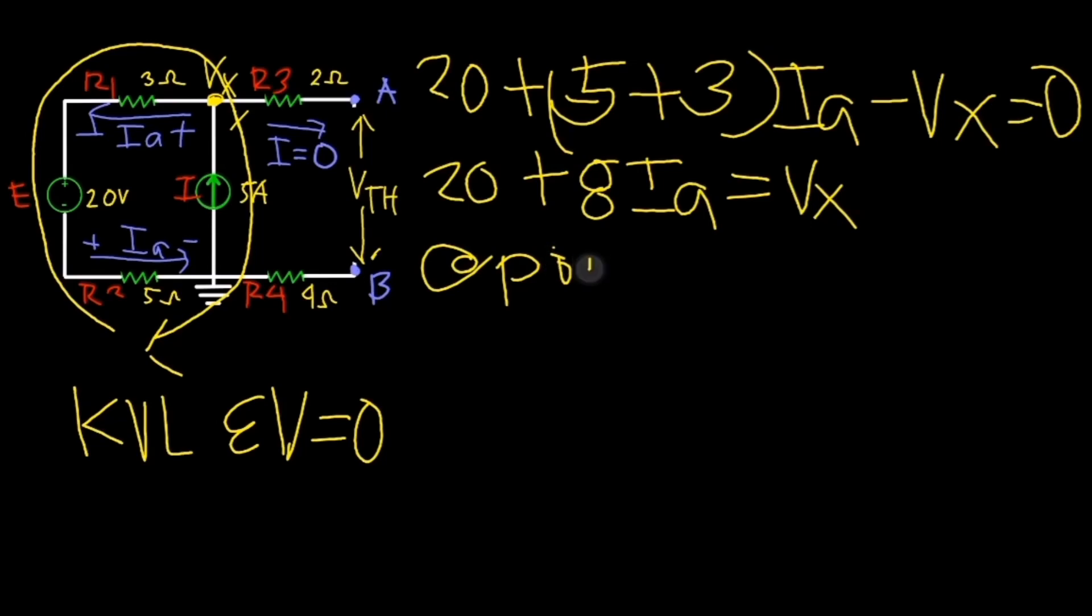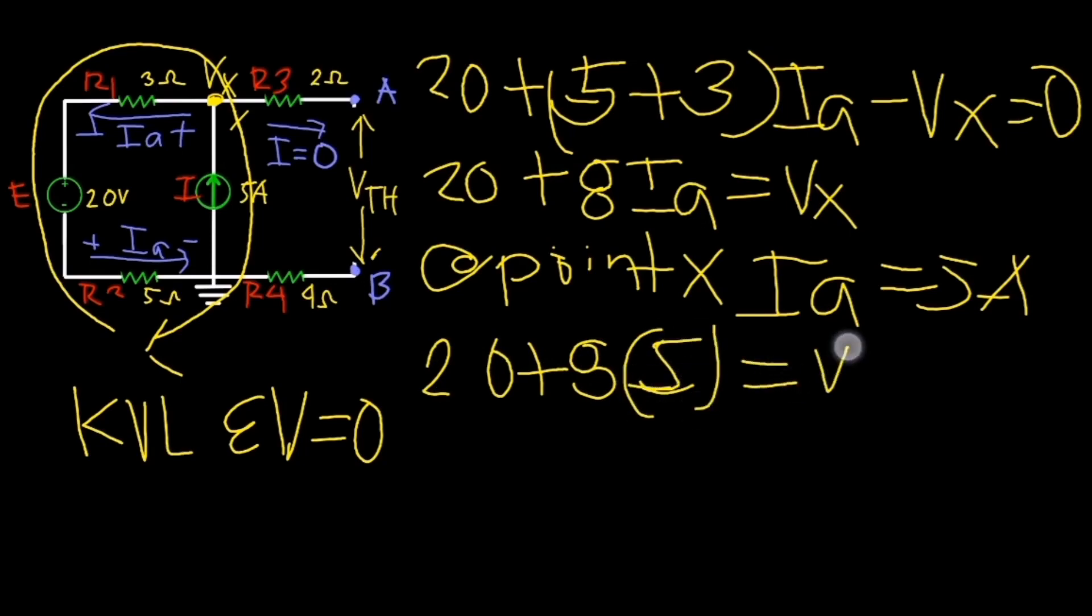At point X, Ia simplifies to 5 amperes as no current flows in the open circuit. Substituting the value of Ia to the KVL equation, we will have 20 plus 8 times 5 equals Vx, resulting in 60 volts.